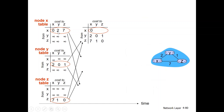For example, we can see the link costs: x to x, x to y, x to z. The distance vector for y and z are initially infinite since they have not been advertised yet. This is the initial step — any unknown distance vector is set to infinite.